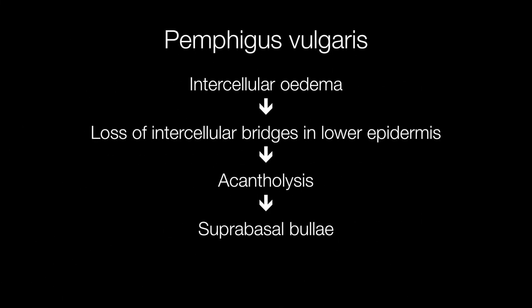Histologically, the first change to occur in Pemphigus vulgaris is intercellular edema. Then there is loss of intercellular bridges in the lower epidermis, and the keratinocytes start to separate. This is acantholysis, and it will result in a suprabasal bulla forming.